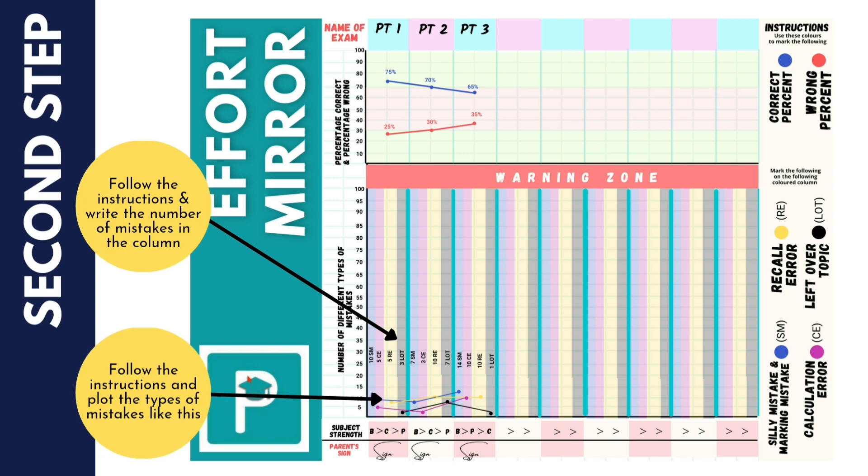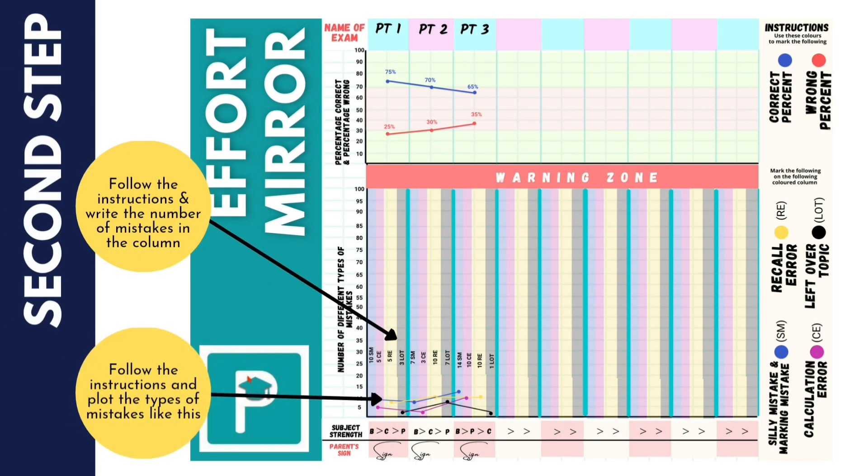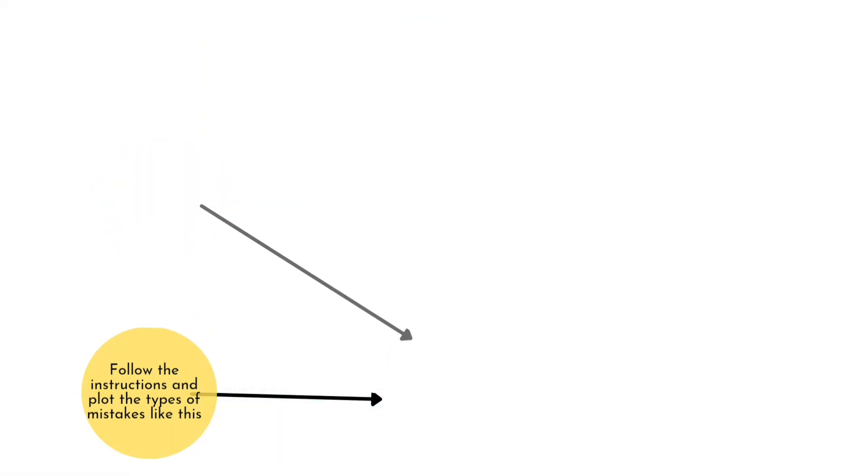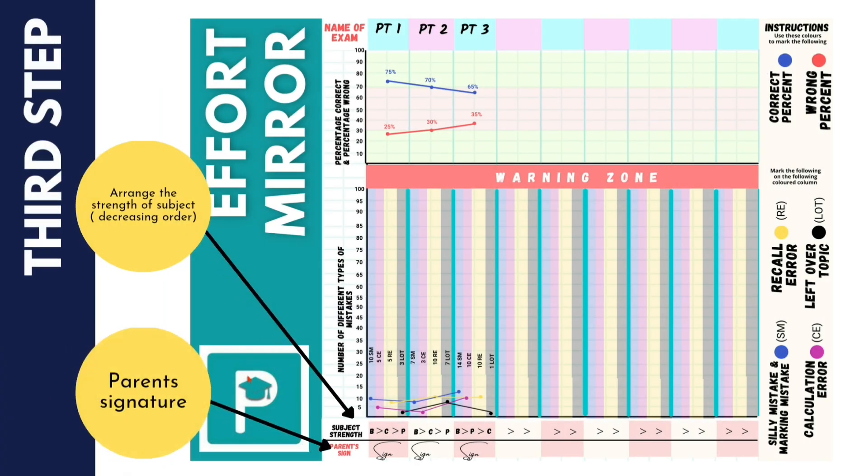We have divided the columns into four different parts of respective colors as described in the instruction column below. You are supposed to plot the type of mistakes using the same color, and that will help you keep a check on the mistakes you have committed. Once you plot the graph, try to keep the number as low as possible and keep the performance soaring high.